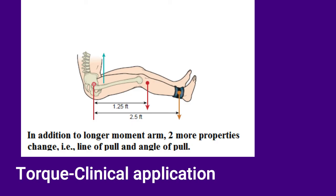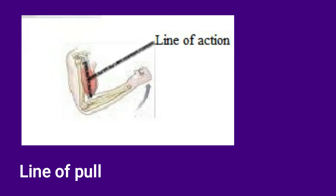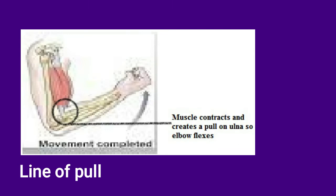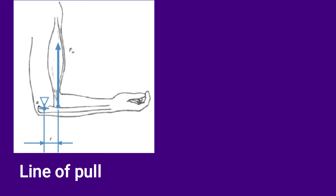Besides the longer moment arm, this also occurs because as the muscle goes through the extension exercise, the muscle's line of pull and angle of pull changes. Line of pull is the line of action of a muscle as it applies force over its attachments, and the direction of this line is usually indicated by the direction of the tendon attachments. When a muscle contracts, it creates a force that pulls on its points of attachment to the skeletal system. The distance between the line of action of a muscle and the joint axis is known as the moment arm, and this distance is helpful in producing torques around the joint axis by a muscle's force.